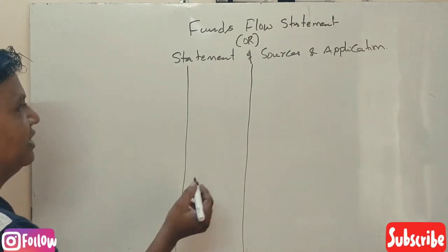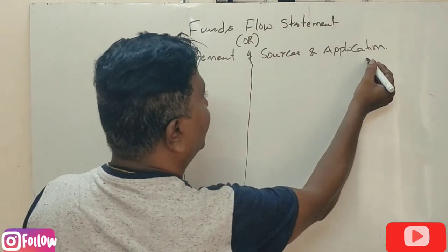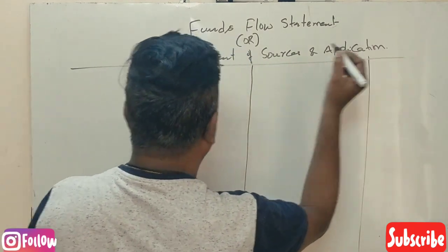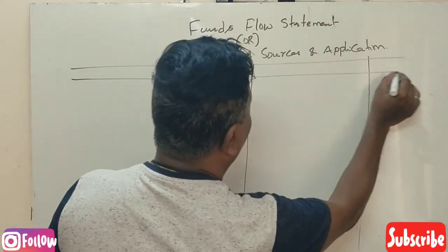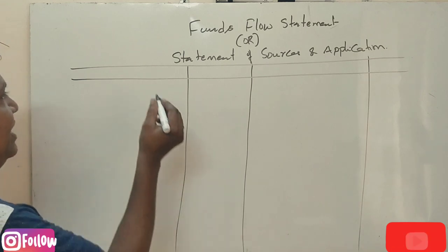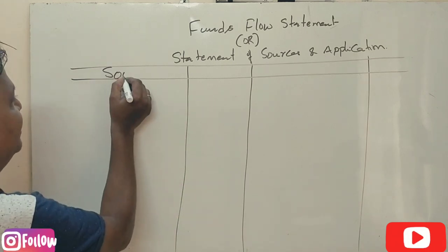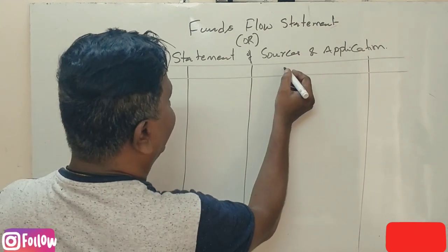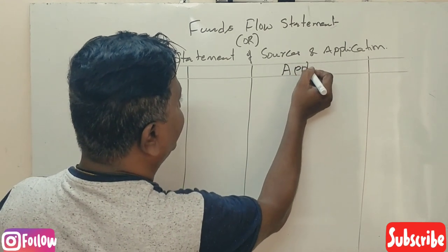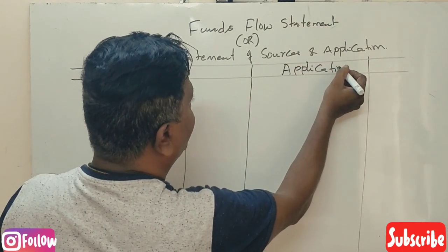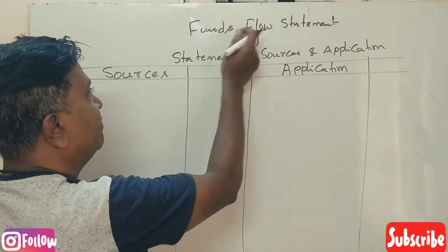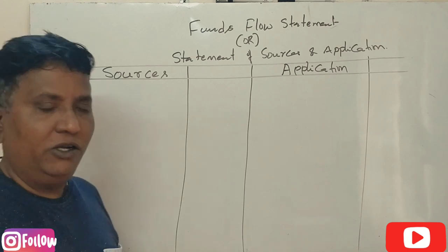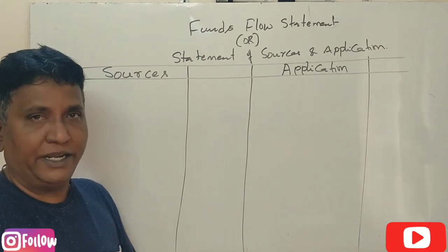We are preparing this statement in two formats — horizontal form and vertical form. In the horizontal format, the left-hand side shows Sources of Funds and the right-hand side shows Application of Funds.